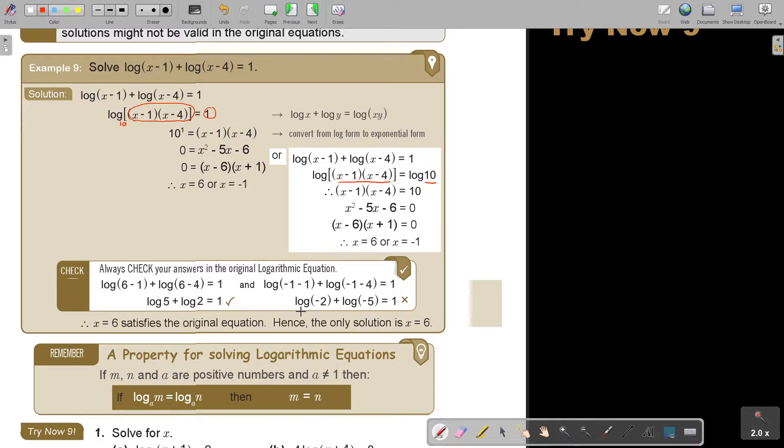In this case, I put the negative 1. And actually all that I have to look, I just must see that I don't get a negative. As soon as I get a negative there, log a negative, then it's not working. So, only X equals 6 satisfied the original equation. Hence, the only solution is X is equal to 6.